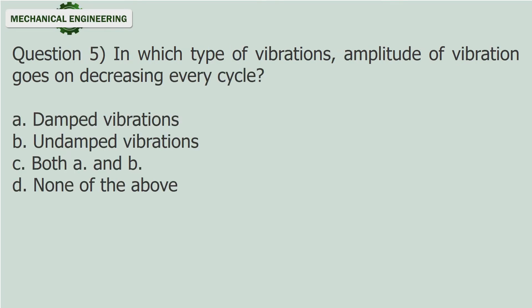Question 5: In which type of vibrations does amplitude of vibration go on decreasing every cycle? a. Damped vibrations. b. Undamped vibrations. c. Both a and b. d. None of the above. Answer: Damped vibrations.